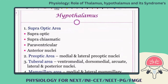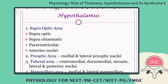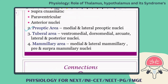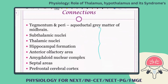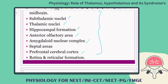The hypothalamus is the higher control center for most of the body's functions. The main nucleus present is the supraoptic and preoptic area. It receives connections from the subthalamic nuclei, thalamic nuclei, hippocampus, olfactory area, amygdaloid nucleus (responsible for memory), prefrontal cortex, and reticular activating system — everything gives sensation to the hypothalamus, which controls the body through the autonomic and endocrine systems.